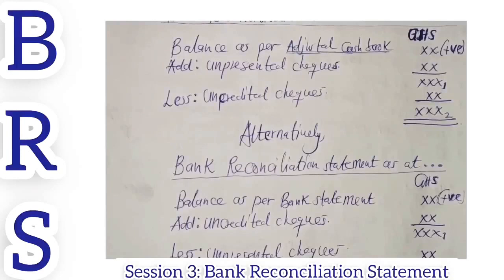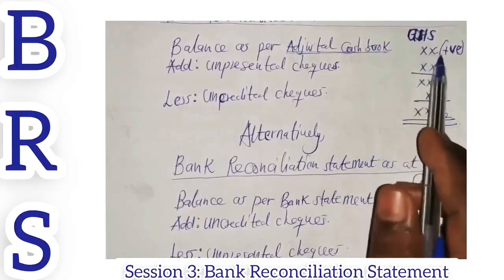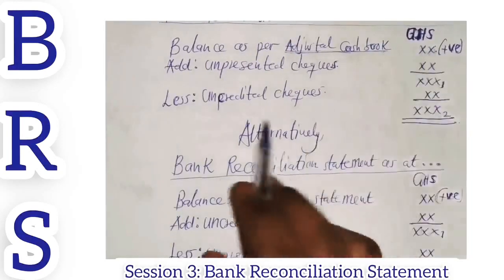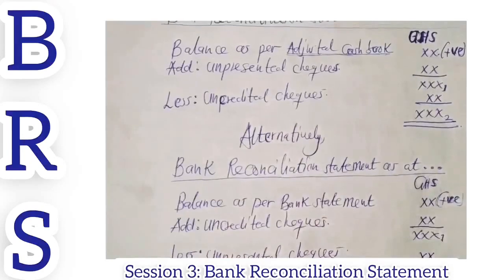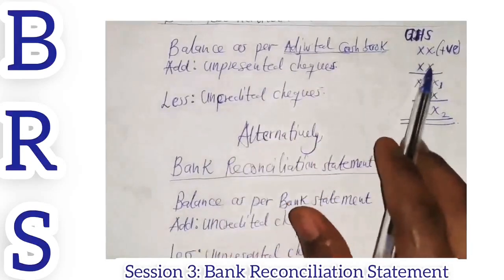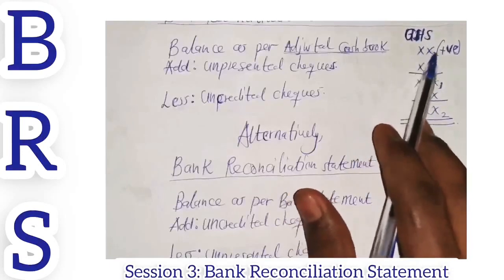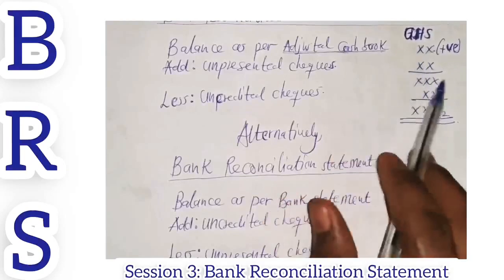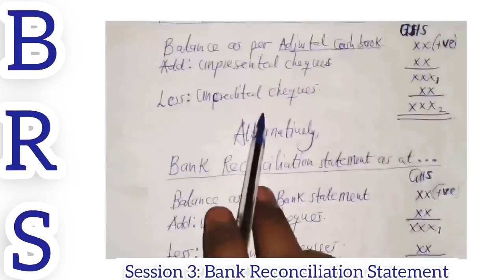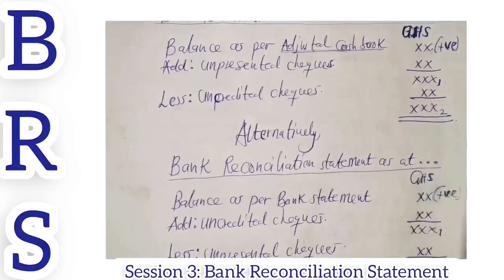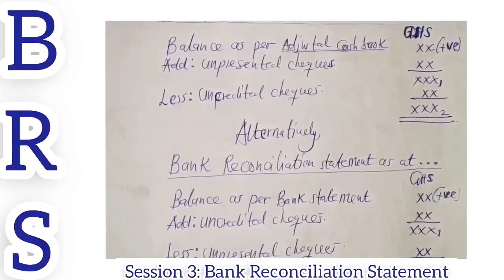Anytime you have a negative balance, all you need to do is put it in brackets. Then follow the same format — the same two approaches we use when the balance is positive. If the adjusted cash book balance is negative and you add an unpresented check, that item becomes positive while the cash book balance remains negative. You apply the arithmetic accordingly. Whether it is the adjusted cash book or the bank statement balance, just put the negative balance in brackets and follow the same format.